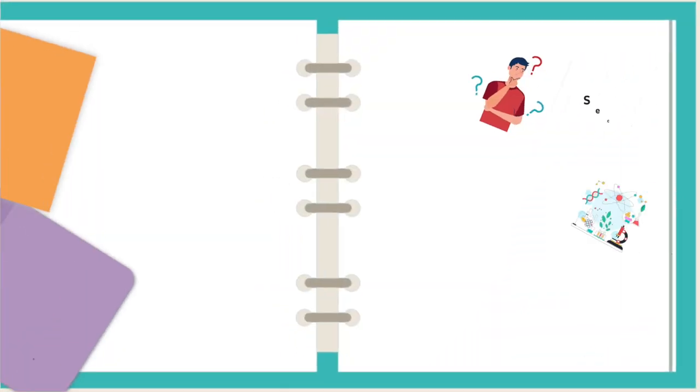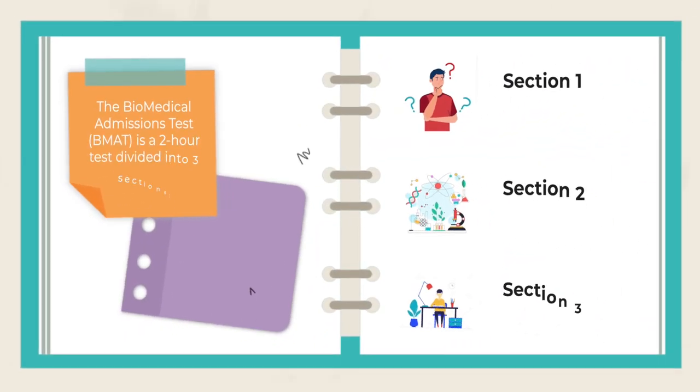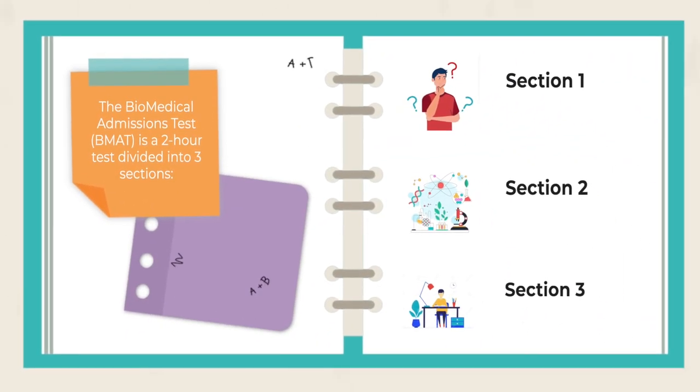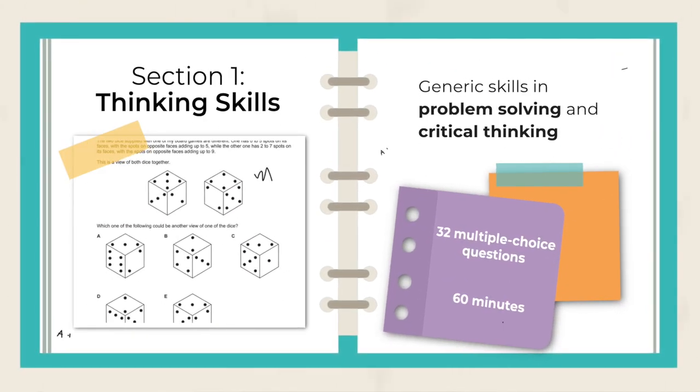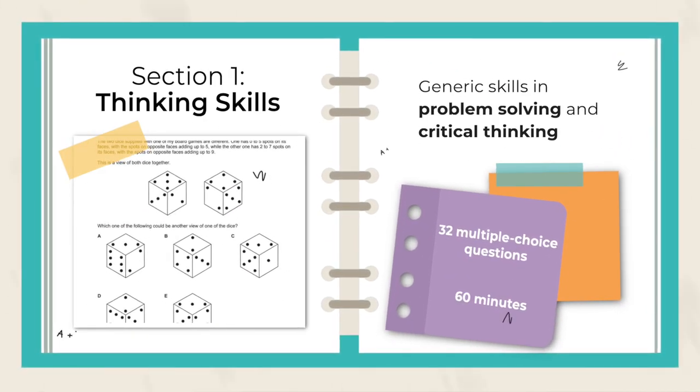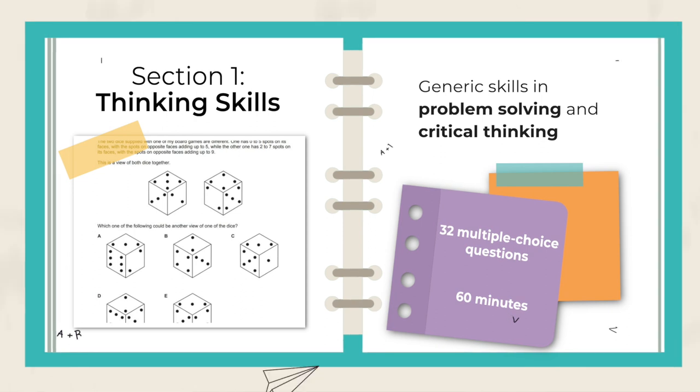If you already know that stuff and want to dive straight into techniques and best ways to score highly, check out the playlist where I go through each section. So the test format: it's a two-hour test divided into three sections. Section one is called Thinking Skills, which is all questions relating to problem solving and critical thinking.